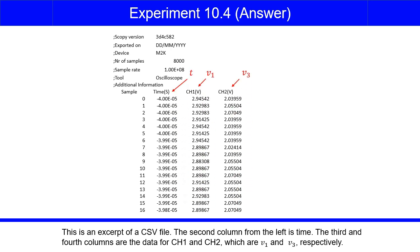This is an excerpt of a CSV file. The second column from the left is time. The third and fourth columns are the data for channel 1 and channel 2, which are V1 and V3 respectively.